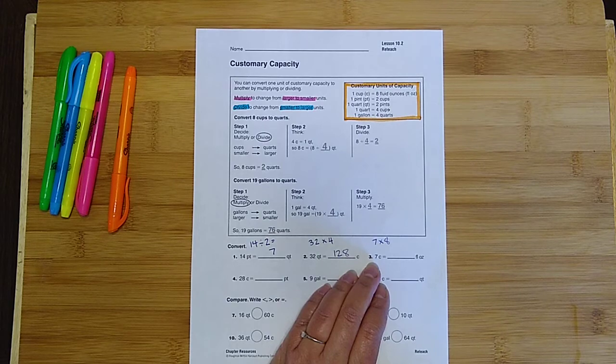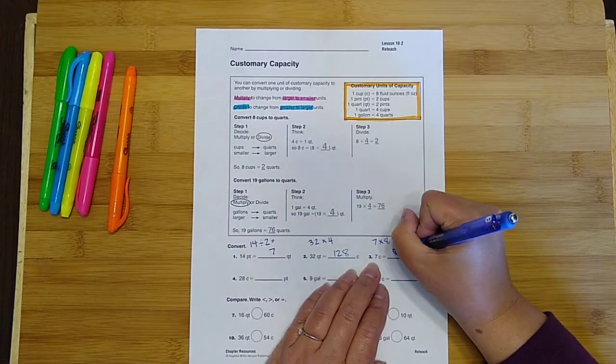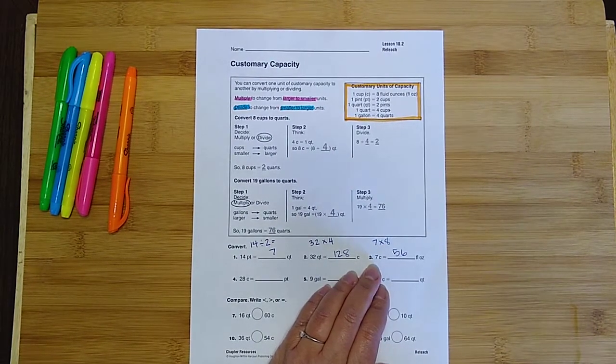I bet you know what 7 times 8 is. What do you think? What is it? That's right, it's 56. Awesome.